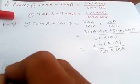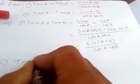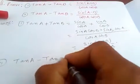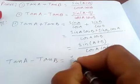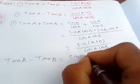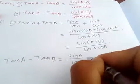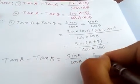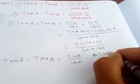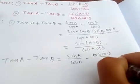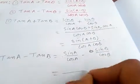For number two: tan(a) - tan(b) = sin(a)/cos(a) - sin(b)/cos(b). Taking the common denominator cos(a)·cos(b),